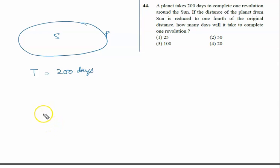If the distance of the planet from the sun is reduced to one-fourth of the original distance, the initial distance is R. So we can say initially R1 is R. Now R2 becomes R by 4.